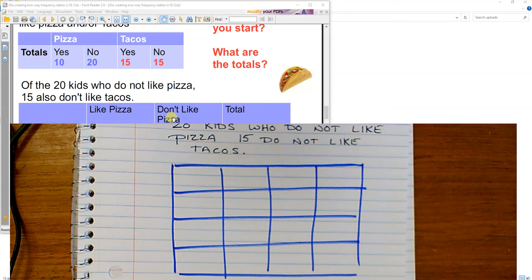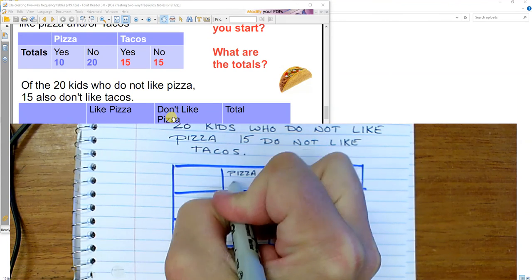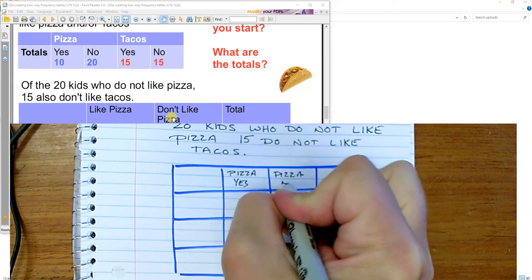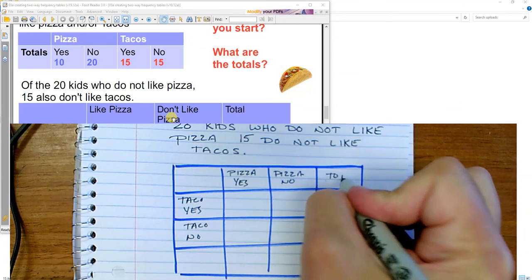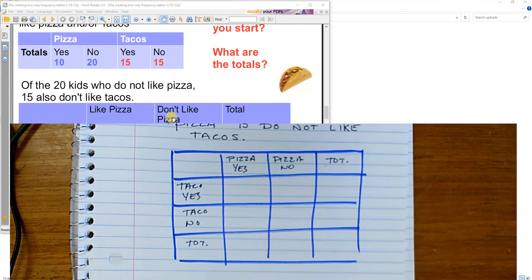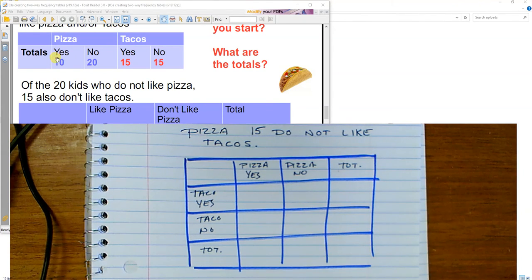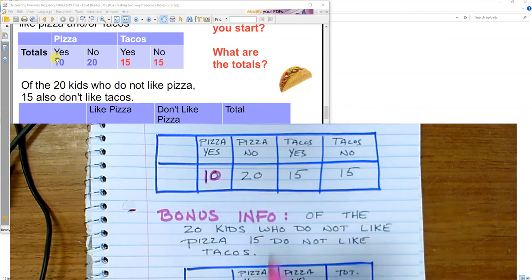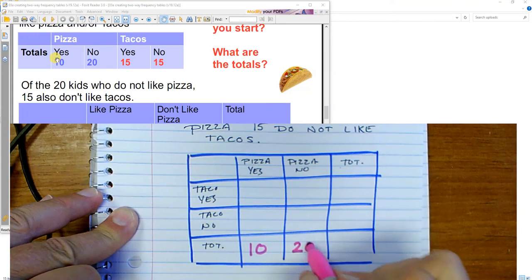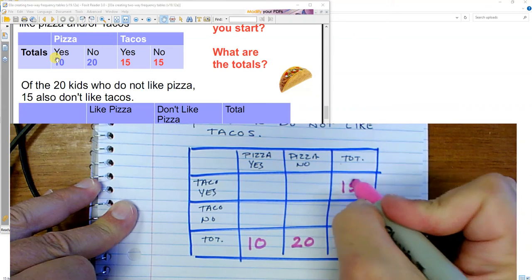And now we have all the information we need to fill in our final 4 by 4 table. So what we are going to have here is pizza yes, pizza no, taco yes, taco no. And what this is is a total and a total. Now I realize you wrote down the information right here, but that's also up here on the screen so I can use it right here. So pizza yes is 10. My pizza no is 20. My tacos yes is 15. My tacos no is 15.